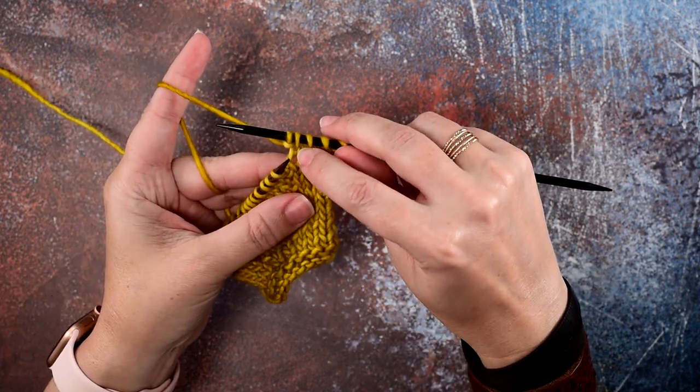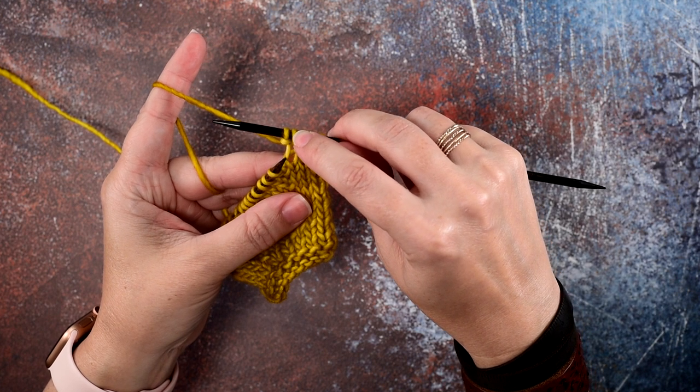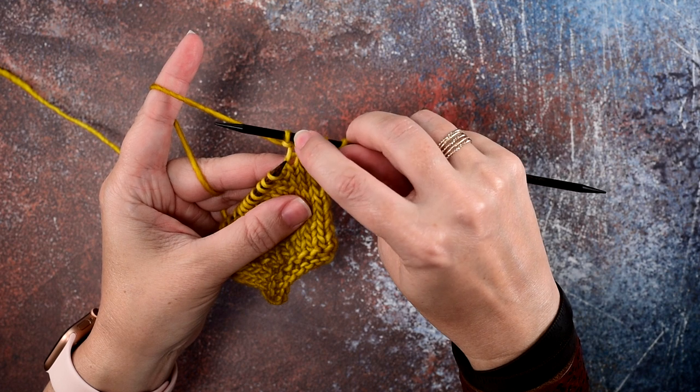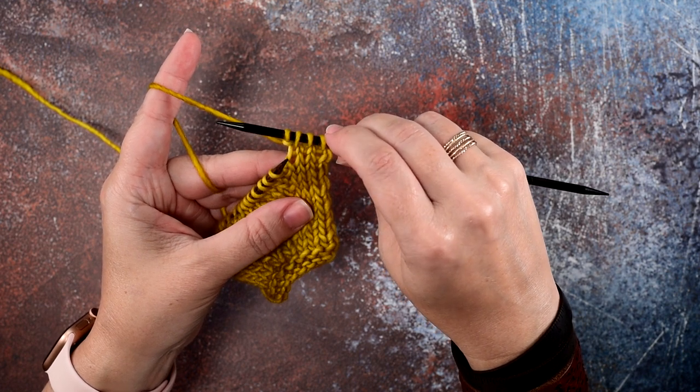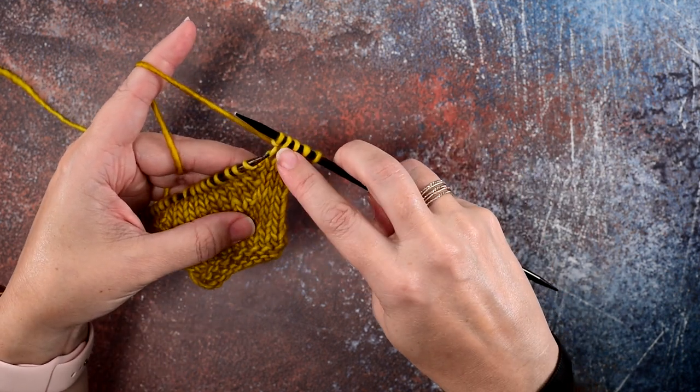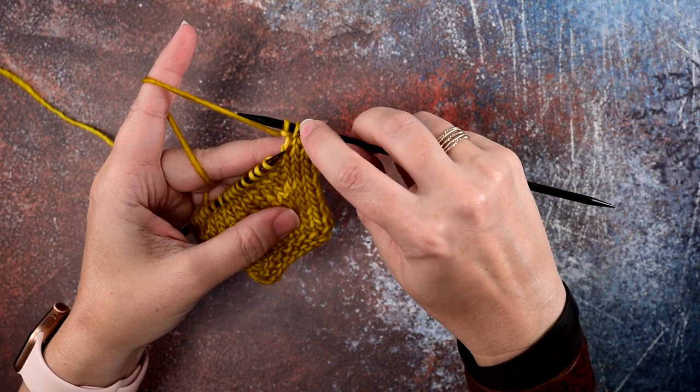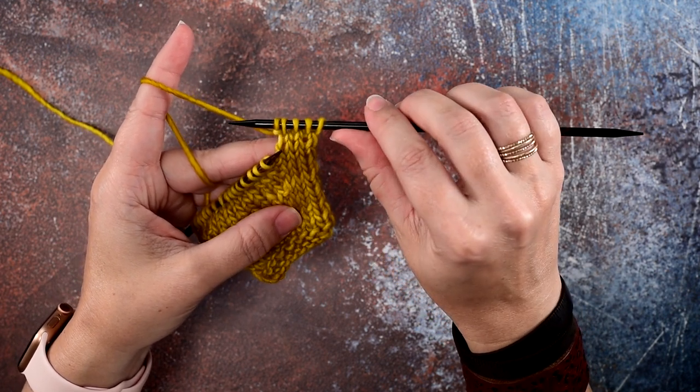You can see we have our original stitch that we knit out of, and then we knitted into the back loop of that same stitch. That gives us our left leaning increase—or actually right leaning—but it places that increase stitch to the left of our original stitch. That is how you work the knit front and back increase.